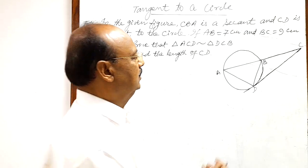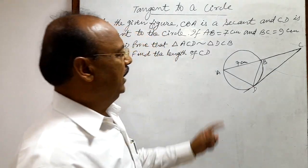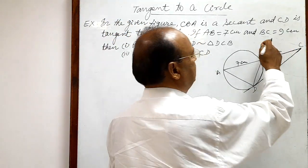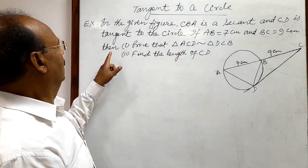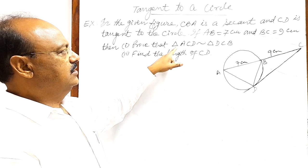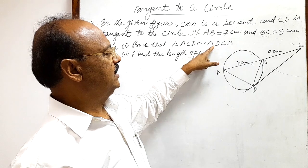...this line segment AB is given here, this is 7 cm, and BC is 9 cm. Then we have to find out: first of all we have to prove that triangle ACD is similar to triangle DCB.